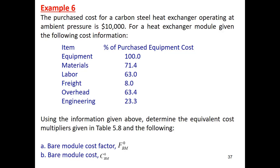Okay, this example: the purchase cost for a carbon steel heat exchanger operating at ambient pressure is given. The purchase cost at ambient pressure, which is one bar, and carbon steel — this is your CP0. CP0 is already given to you: the purchase cost of the equipment, a heat exchanger made of carbon steel at one bar.